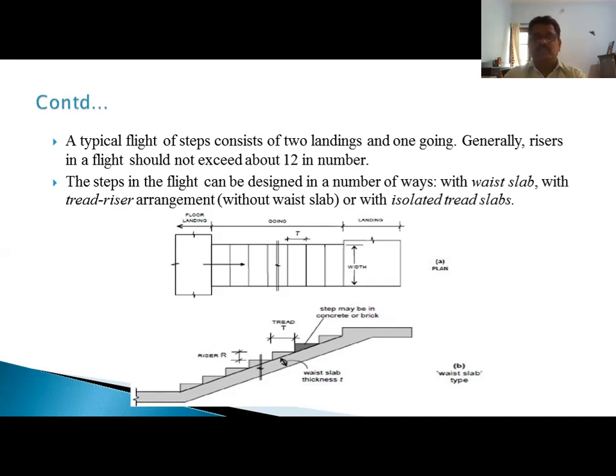So here you can see a typical staircase plan and section. This is the landing portion, these are the landing portions, these are the straight parts. In plan you can see only treads. If you come to section, this is the rise part, this is the waist slab, this is the landing portion. If you see these two views, one is plan and another section, you can understand the concept of stairs.